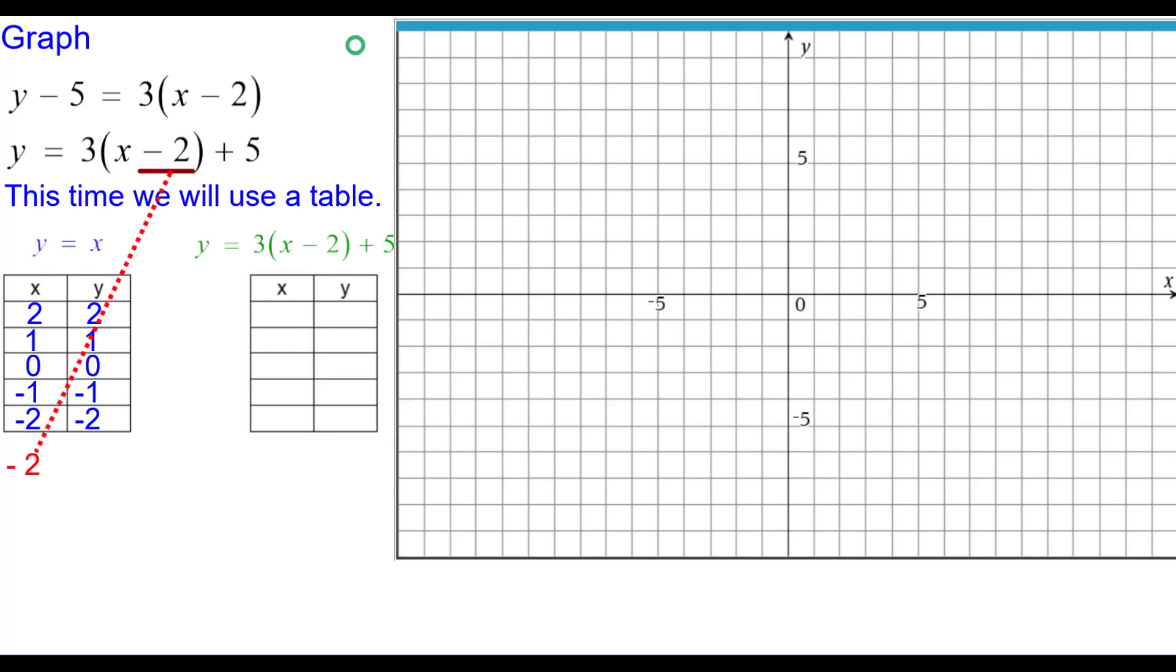Again, looking at the parameters, the minus 2 is the only one that affects the x values. This shifts each point to the right two units. So that means we have to add 2 to each x value. So that's what we're going to do. So 2 plus 2 is 4, 1 plus 2 is 3, and so on.